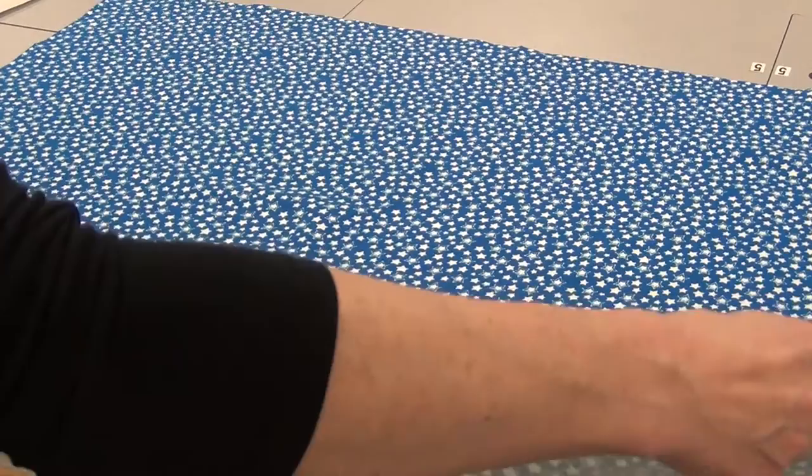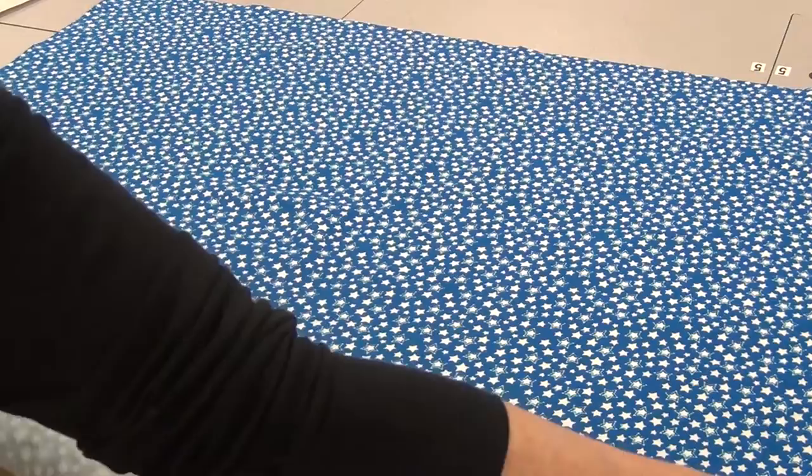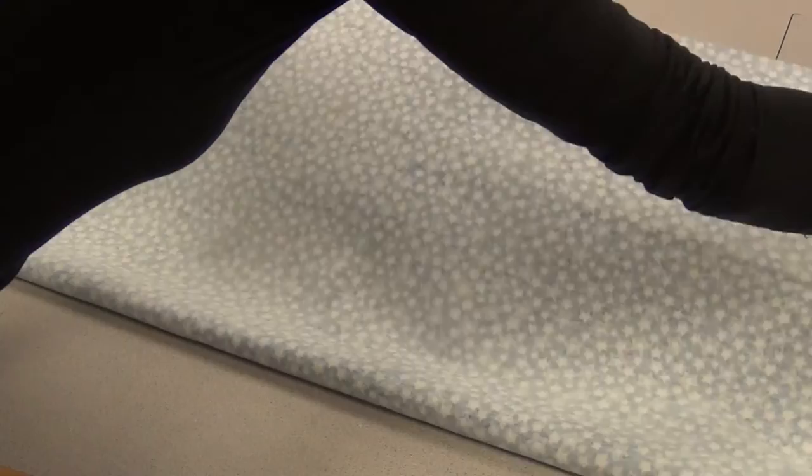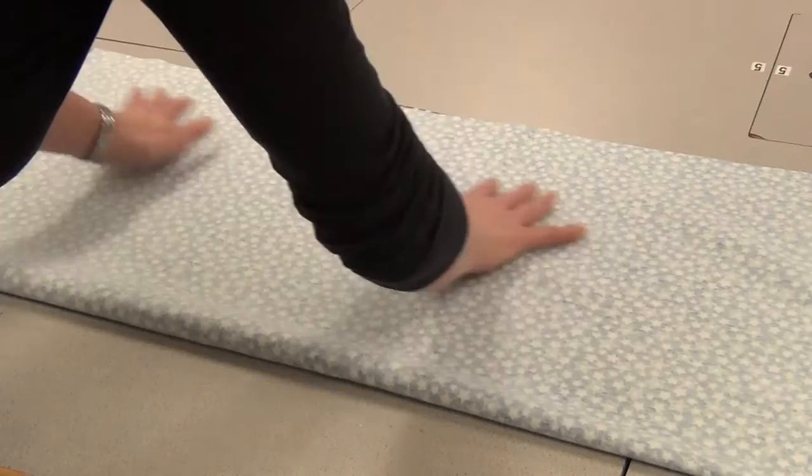Then you're going to take your fabric. I've got the cut edge at the top and the bottom and the selvedge which is the finished edge on the side. I'm going to fold it width-ways like this so your two edges meet, the two cut edges meet at the top and the two selvedges meet at the side.